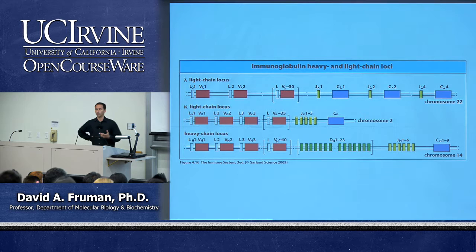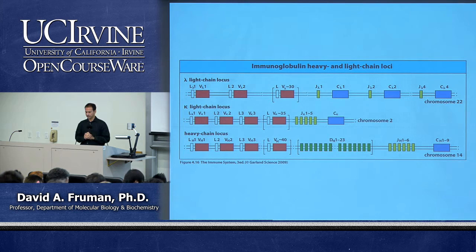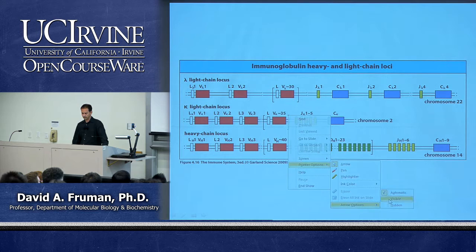It's not that we have 10 billion different genes — we know we have a finite number, more like 25,000 or so in our genome. What we're going to talk about today is the process of gene rearrangement that leads to assortment and generation of antibody genes. It occurs because there's a limited number of gene segments that recombine randomly to generate this repertoire.